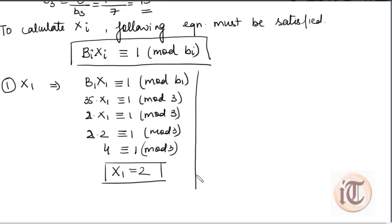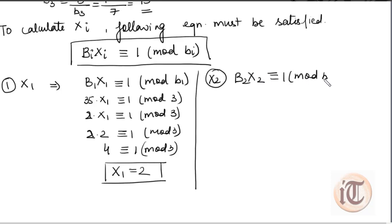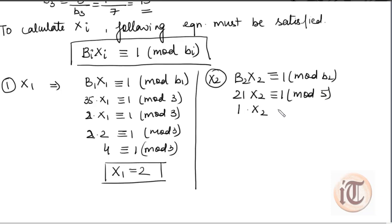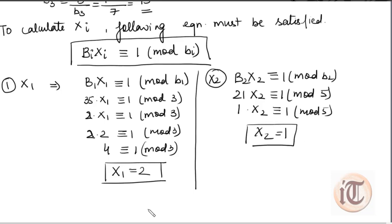For x2: B2·x2 ≡ 1 (mod b2), which gives 21·x2 ≡ 1 (mod 5). Dividing 21 by 5 gives remainder 1, so 1·x2 ≡ 1 (mod 5). Therefore x2 = 1, since 1×1=1 and dividing by 5 gives remainder 1.